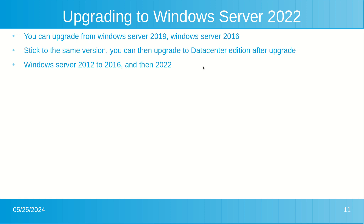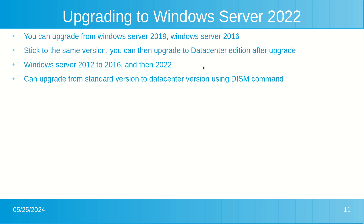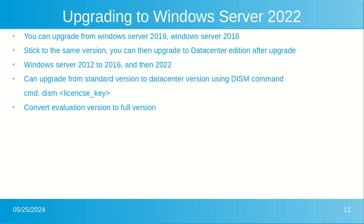You will need to reinstall the operating system if you have a beta version. You can upgrade your Standard version of Windows Server 2022 to the Datacenter version using the DISM command followed by the software key. The command is DISM space license key. You will then be prompted to reboot and it will become the new version after logging in. You can convert your evaluation version to the same version you currently own.